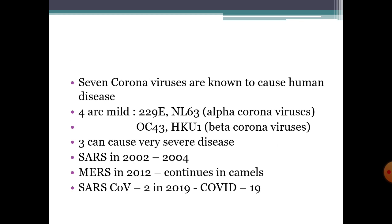The other three can cause very severe disease. They are SARS-coronavirus or severe acute respiratory syndrome coronavirus, which occurred in 2002-2004; MERS-coronavirus or Middle East Respiratory Syndrome coronavirus, which occurred in 2012 and still continues in camels; and SARS-coronavirus-2 in 2019.